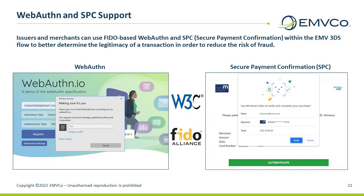Let's look briefly at how WebAuthn and SPC support has been integrated. EMVCo 3DS has collaborated with the World Wide Web Consortium (W3C) and the FIDO Alliance to include support for WebAuthn and SPC. WebAuthn is used as a 3DS challenge method if additional cardholder authentication is required, such as with high-value transactions. In this case, there is no 3DS flow change for issuers to use WebAuthn. EMVCo 3DS version 2.3 enables new data elements for WebAuthn support, and WebAuthn prompts the final challenge, with the user interface controlled by the browser and operating system.